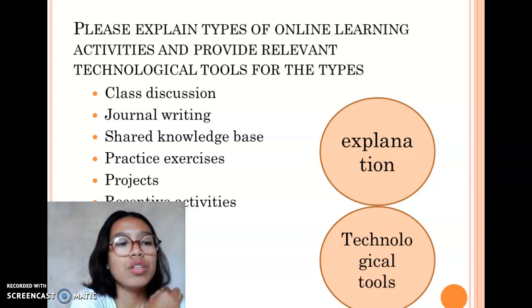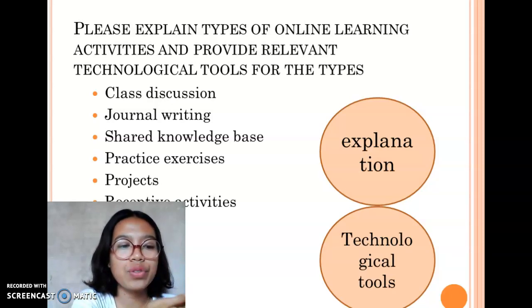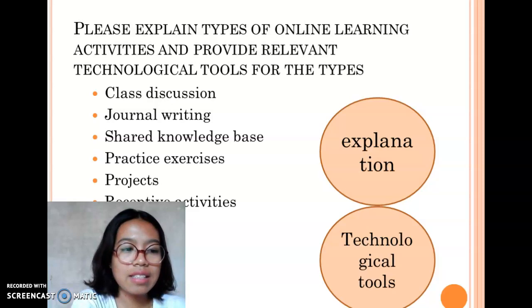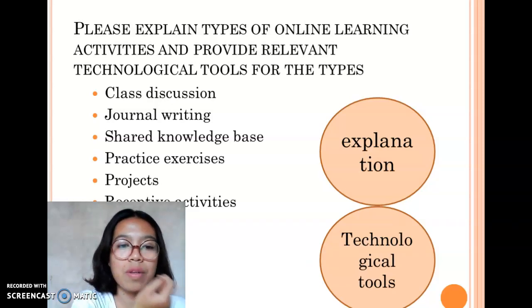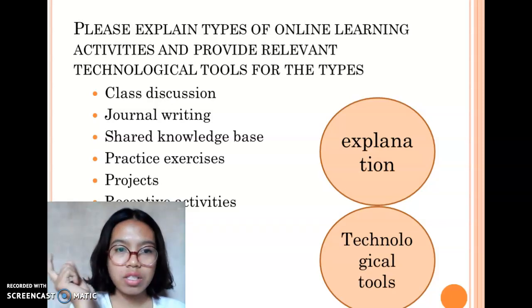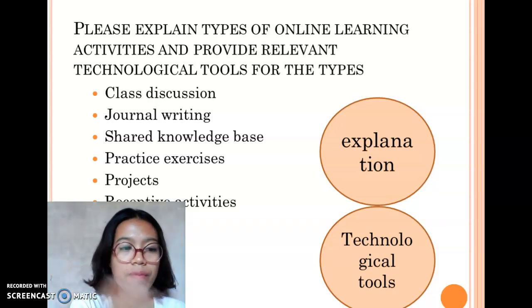The second one is journal writing. Journal writing is the variance in type of journal related to what the teacher as guide emphasizes and what the student prefers. The tool that is used in this journal writing is blog.